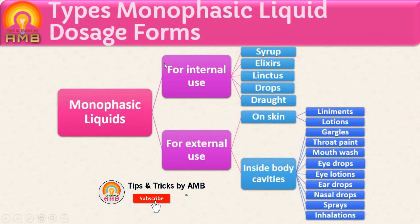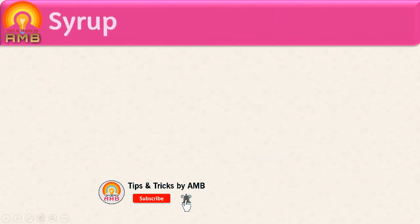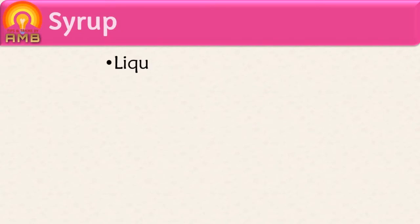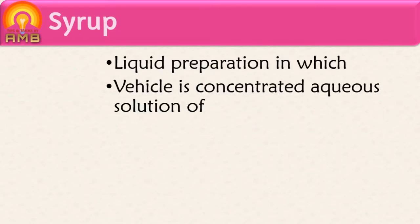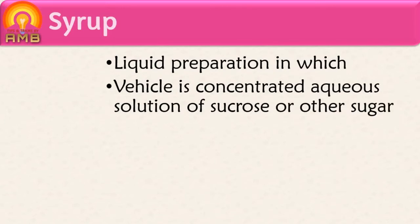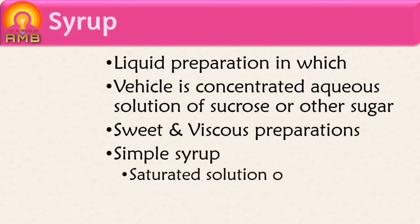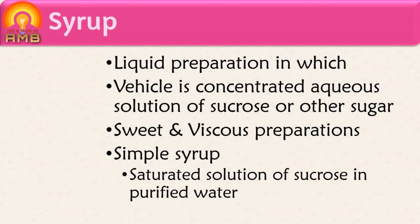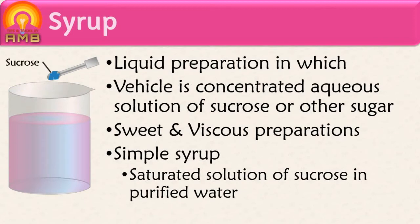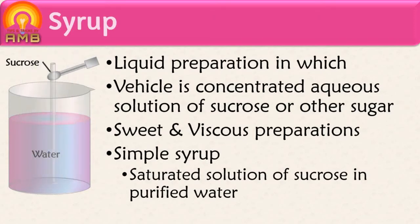In this video we are going to discuss only monophasic liquid dosage forms for internal administration. First of which is syrup. Syrups are liquid preparations in which the vehicle is a concentrated aqueous solution of sucrose or other sugar. These are sweet and viscous preparations. Simple syrup is a saturated solution of sucrose in purified water. Saturated means beyond this quantity, if we add more substance in the vehicle, it will not dissolve.